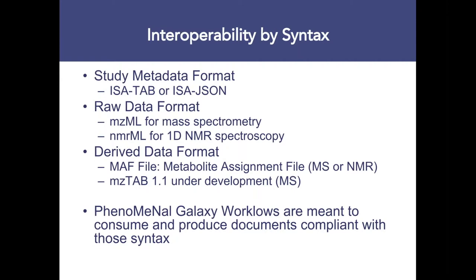For derived datasets, which allow you to report the identification of metabolites or features measured, we have two options: the MAF file used by the EMBL-EBI MetaboLights repository — which caters for metabolite assignment found in MS or NMR — and we are also transitioning to mzTab 1.1, which is under development but coming to fruition soon, catering for a more complete description of mass spectrometry identification. Within Galaxy workflows and tools built over the last few years, these fundamental syntaxes have been embedded and consumed or produced by the different workflows.